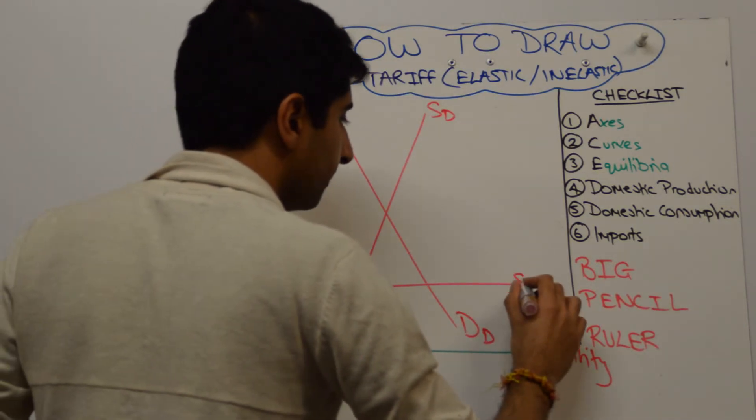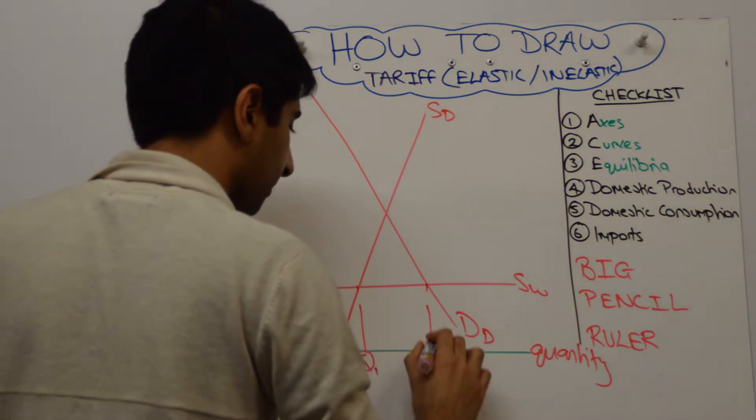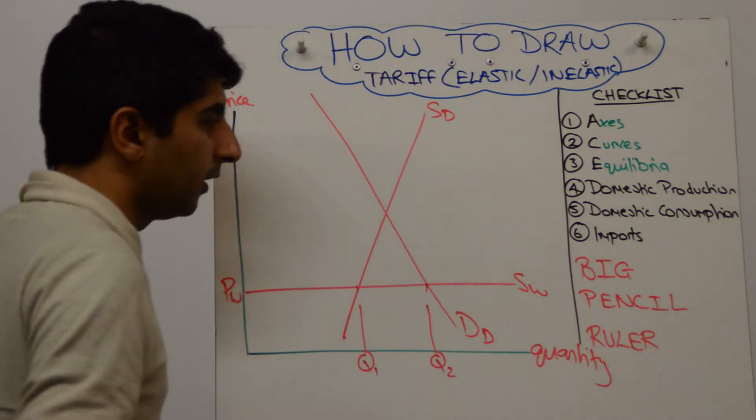Your world supply is normal with the price of Pw, where Q1 represents domestic production and Q2, domestic consumption.